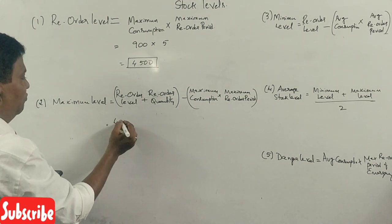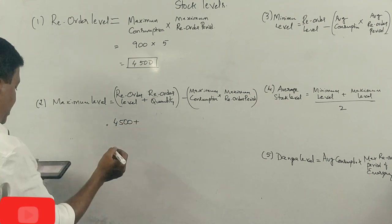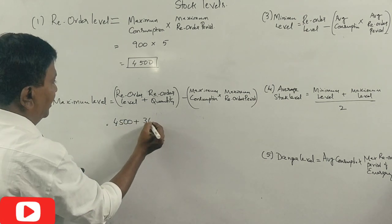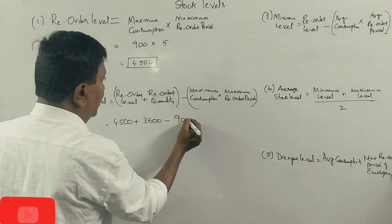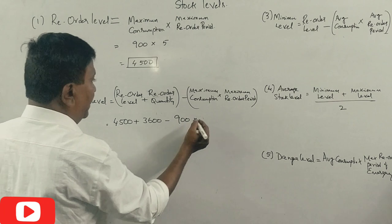Reorder level is 4500, reorder quantity is 3600, maximum consumption is 900 and maximum reorder period is 5.